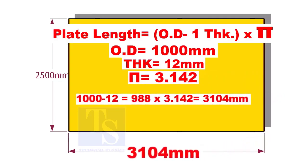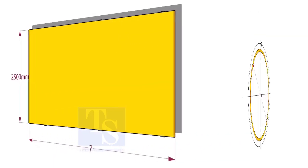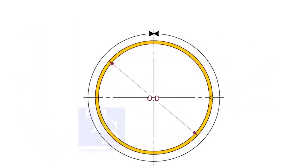If you mark this length on a 12 mm thick plate, after rolling the plate, the outer diameter of the plate will be 1000 mm, and the circumference will be 3142 mm.